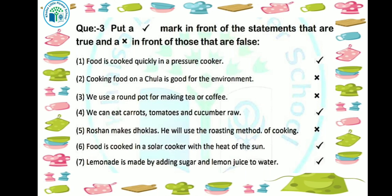Next: food is cooked in a solar cooker with the heat of the sun. Using the sun's heat in a solar cooker, food is prepared. So this sentence is true.